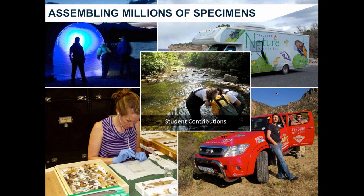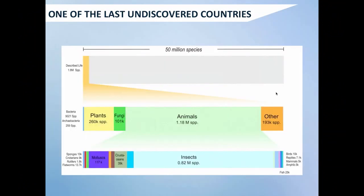Now we also have student collaborations. Students are able to contribute to this gigantic database and add scientific knowledge as well. If you think about it, we know very little of what's out there. It's estimated that there are about 50 million species, and we only know or have described 1.8 million. Of those species we've described, we actually don't have barcodes for a lot of them. In terms of student contribution, there is a lot to be discovered — they might be able to find new species that have never been described before, or contribute barcodes to species we know but haven't barcoded yet.